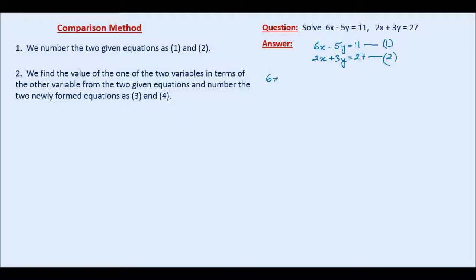I am writing the first equation once more, 6x minus 5y equal to 11. I am not going into the details. I am directly writing the final expression. So x becomes equal to 11 plus 5y over 6 and we number this equation as equation number three.